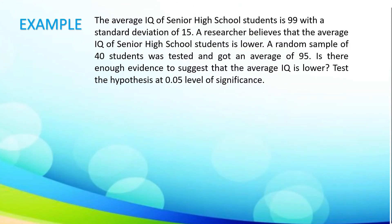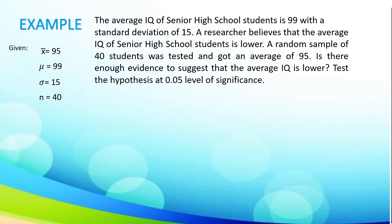Let's take another example. The average IQ of senior high school students is 99 with a standard deviation of 15. A researcher believes that the average IQ of senior high school students is lower. A random sample of 40 students was tested and got an average of 95. Is there enough evidence to suggest that the average IQ is lower? Test the hypothesis at the 0.05 level of significance. Let us identify the given: sample mean is 95, population mean is 99, standard deviation is 15, sample size is 40, and level of significance is 0.05.